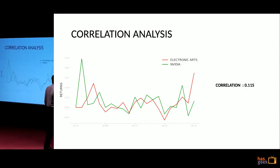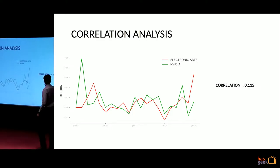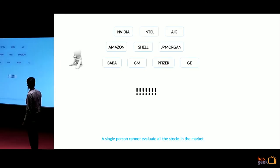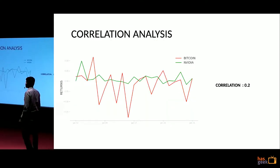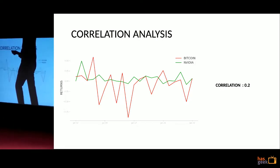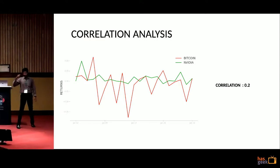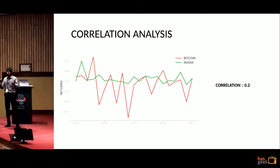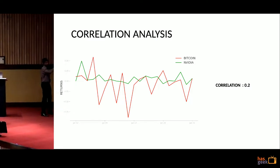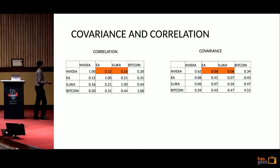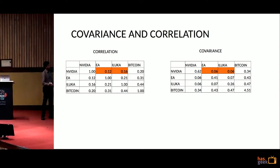Let's bring back the same charts as a puzzle. Electronic Arts and Nvidia have a correlation of 0.115. What will be the correlation for Bitcoin and Nvidia — less or more? It is actually 0.2. So you immediately see there is a problem with correlation analysis, because it is statistical in nature. What we see visually — our minds have neural networks that gather that information — but when we look at values, they look at only points, not directions.